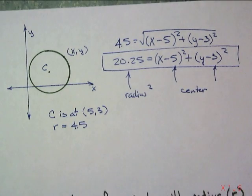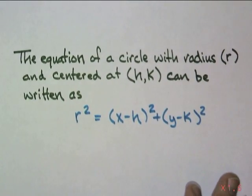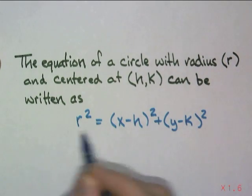So, in general, the equation for a circle with radius r and centered at (h,k) can be written as r² = (x - h)² + (y - k)². And I'd really like you to write it in this fashion.